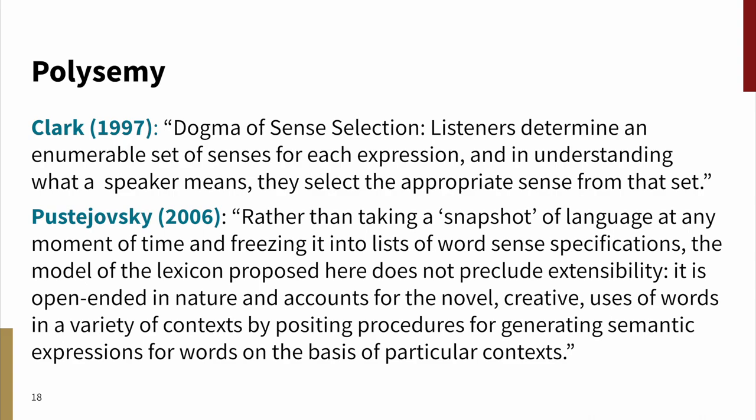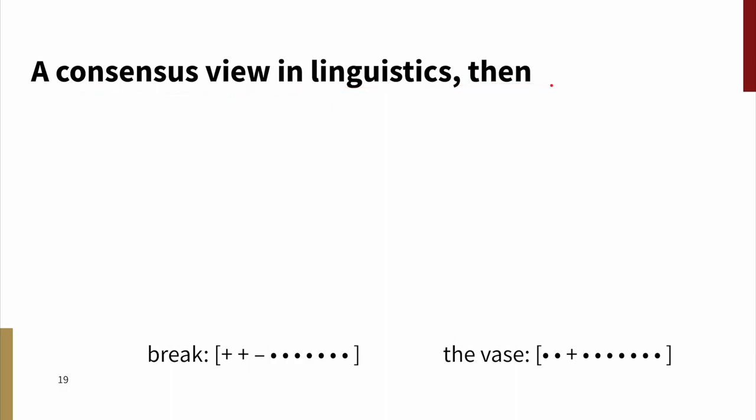Pustejovsky writes, rather than taking a snapshot of language at any moment of time and freezing it into lists of word sense specifications, the model of the lexicon proposed here does not preclude extensibility. It is open-ended in nature and accounts for the novel creative uses of words in a variety of contexts by positing procedures for generating semantic expressions for words on the basis of particular contexts. So I think Pustejovsky imagines formal constraints on this sense-making process, where I think Clark is assuming that the only constraints are those of intelligibility and communication. But this is perhaps incidental relative to the core shared insight here. So I'll be so bold as to summarize all of this under the heading of a consensus view in linguistics. We have some lexical meanings here given with a finite number of meaning dimensions, which I've signified with these partly underspecified vectors of feature values.